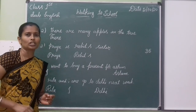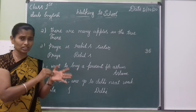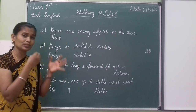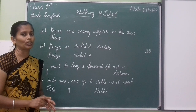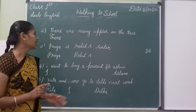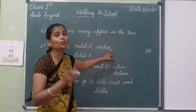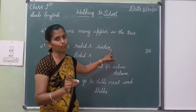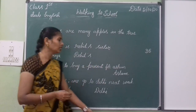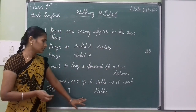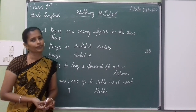Some children start with a small letter — that is wrong. You have to write capital letters. After the sentence, you should put a full stop. This is called punctuation.